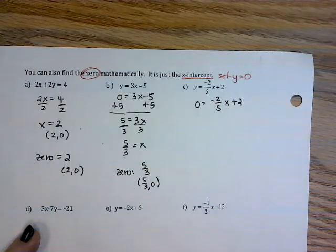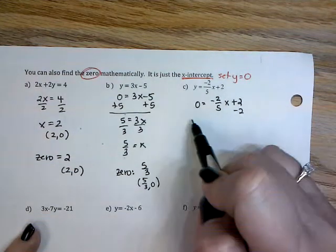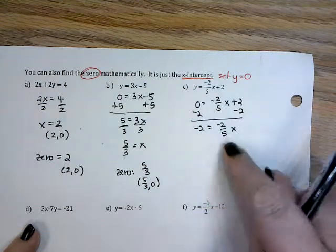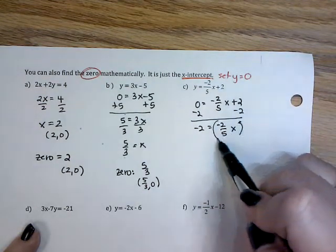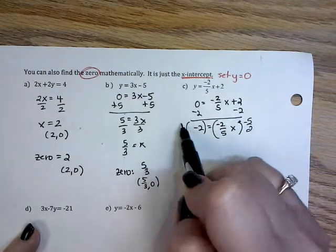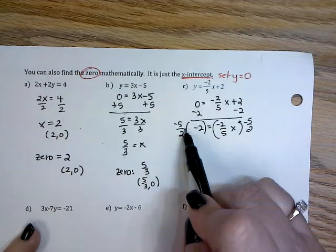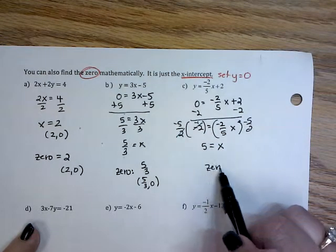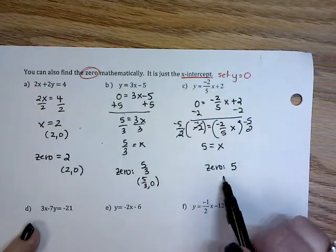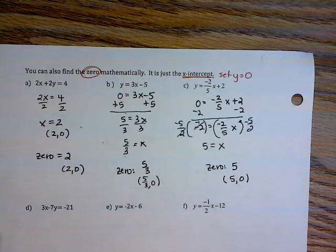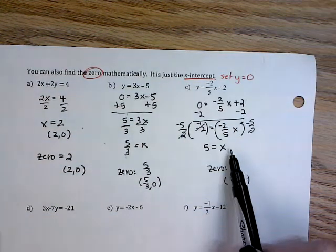Example C: finding my x-intercept, so y is 0. I need to get rid of my fractions, so I'm going to multiply the whole thing times the reciprocal. I'm going to reduce before I multiply, so 5 equals x. So my zero is 5, or it is (5, 0). It can be the ordered pair or the number, depending on how you write it.